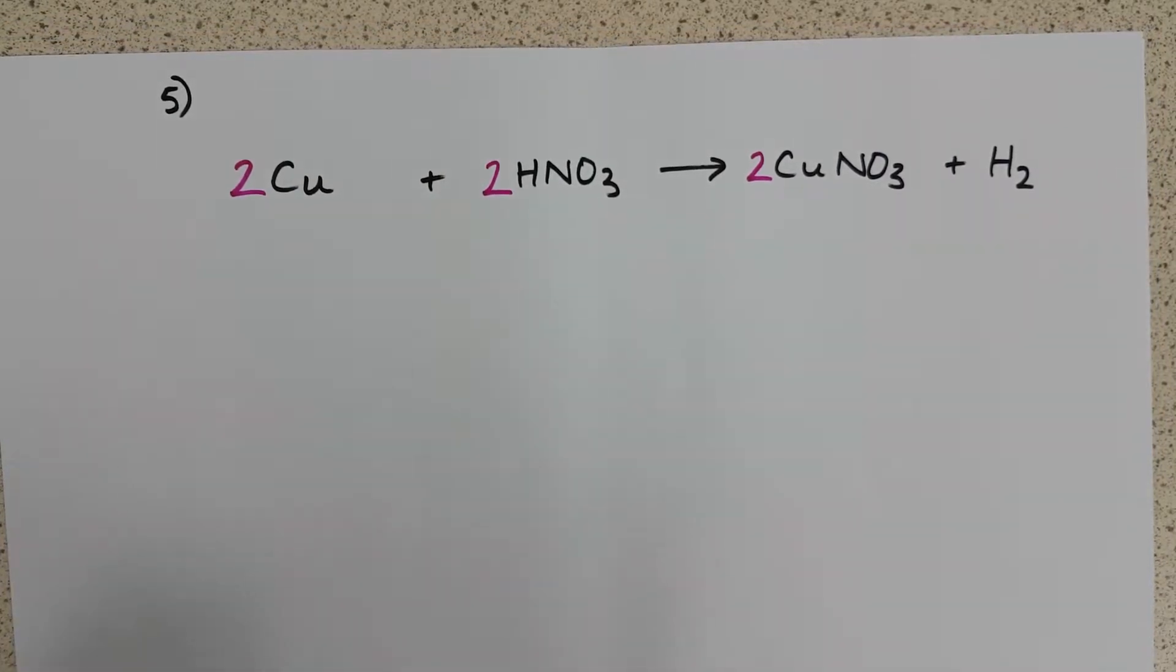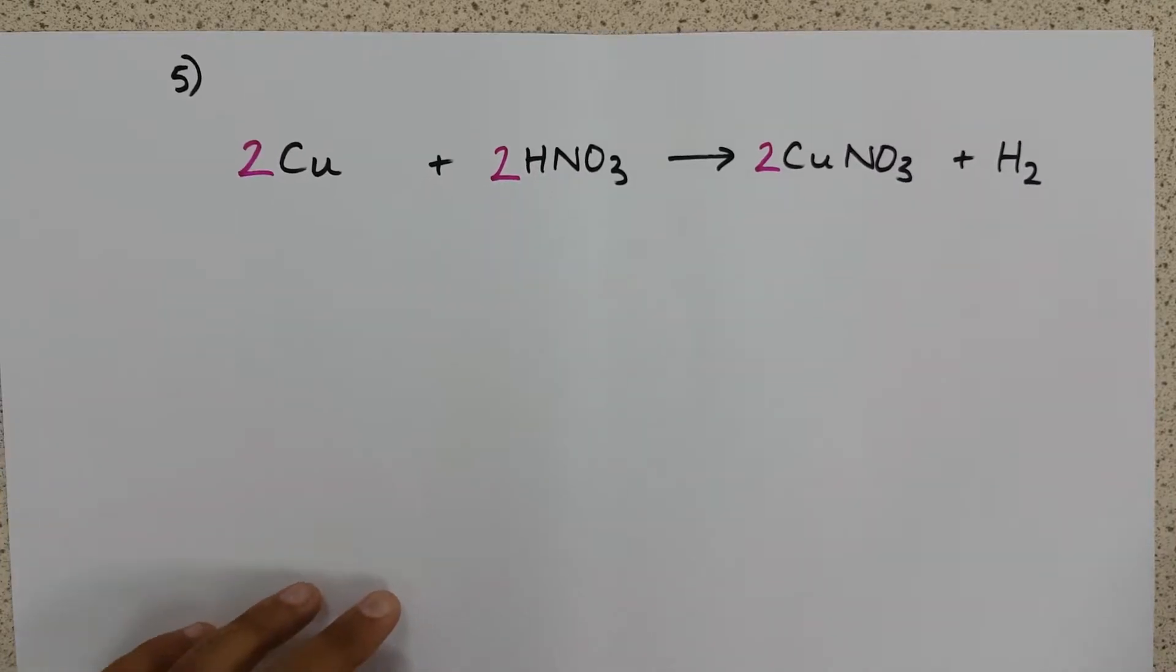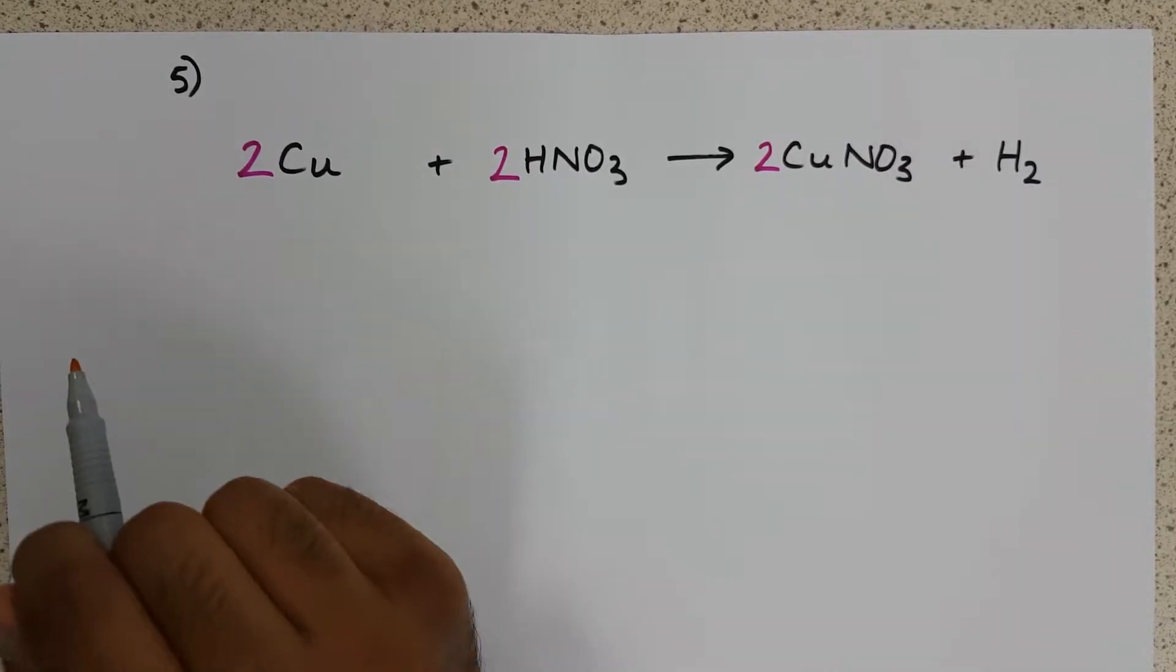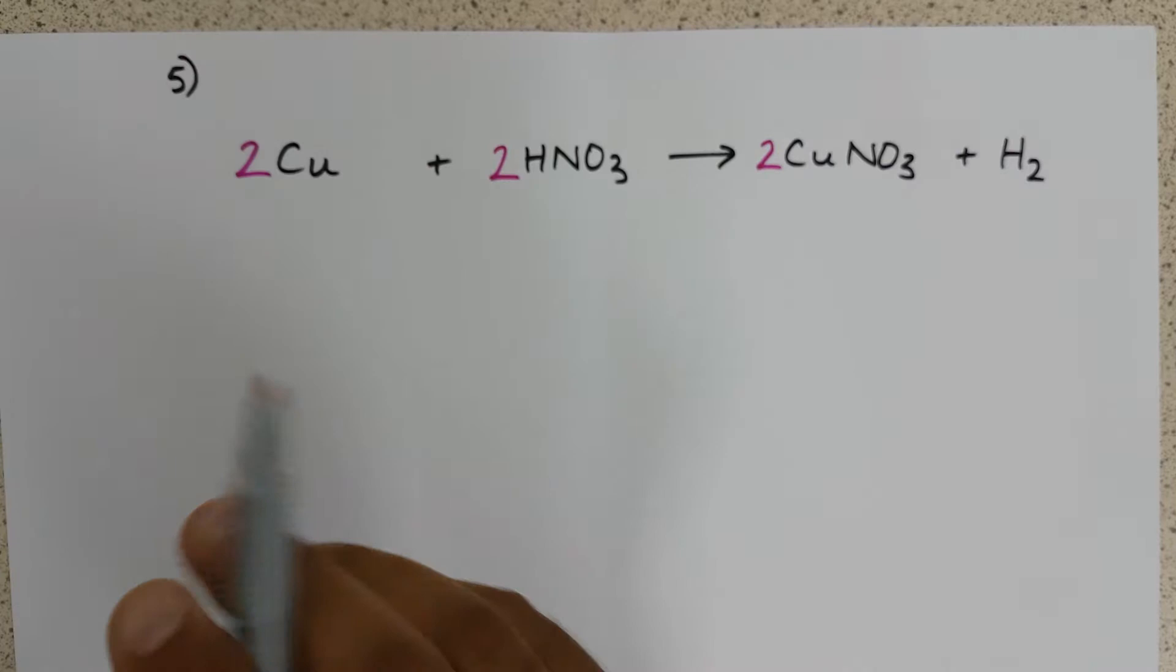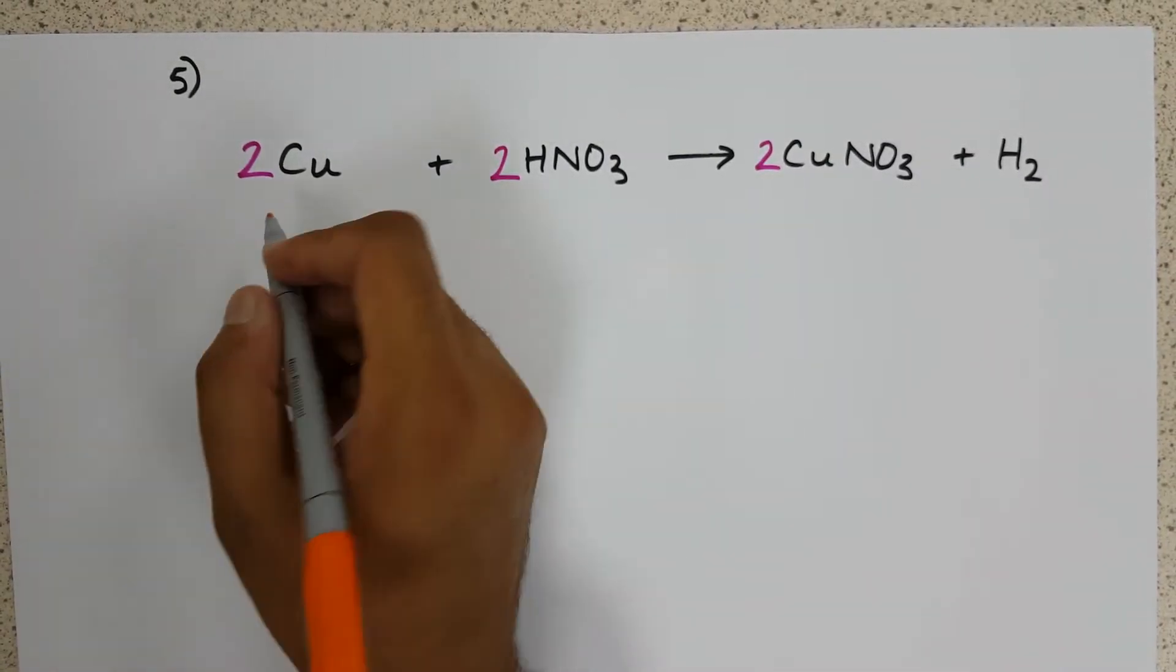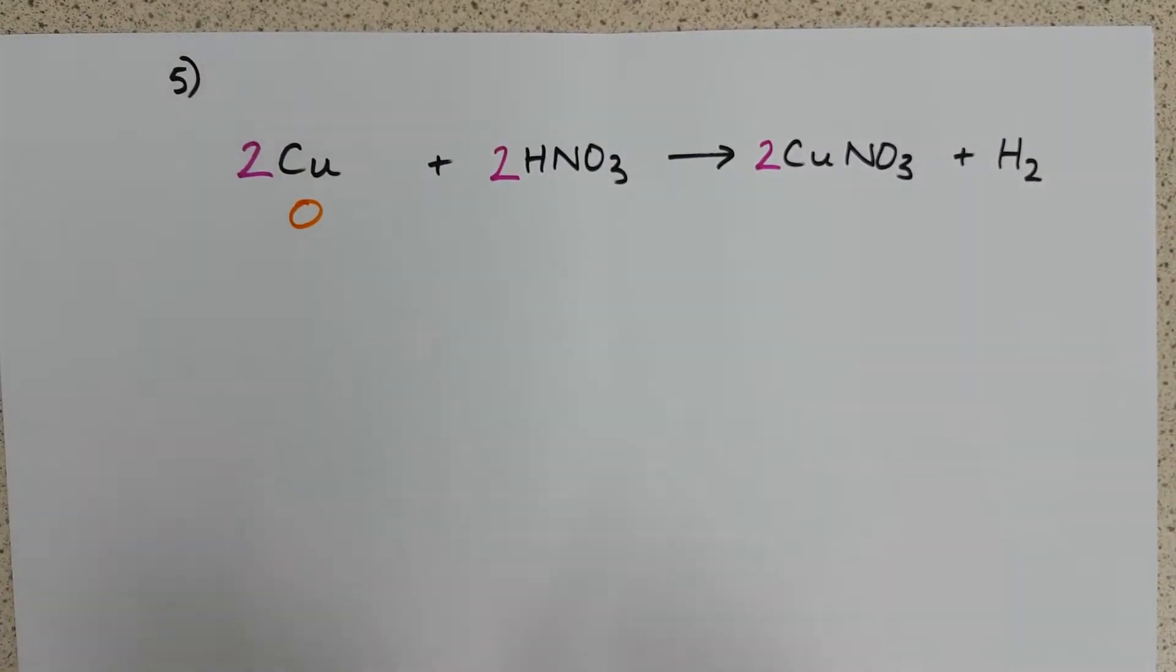So now that we have our balanced equation, we can begin to look at the oxidation and the reduction that's going on. Copper, uncombined in its elemental form, has an oxidation state of zero.